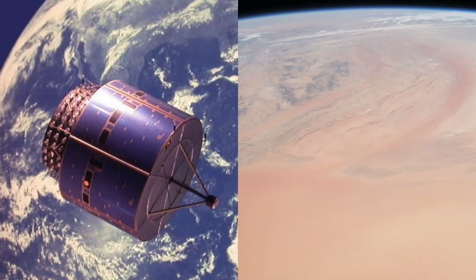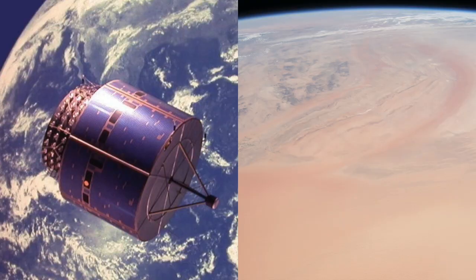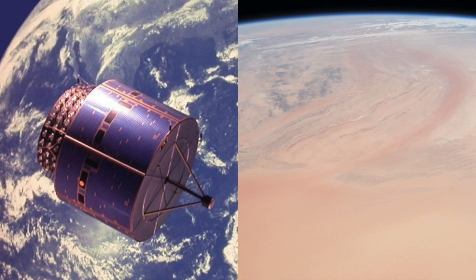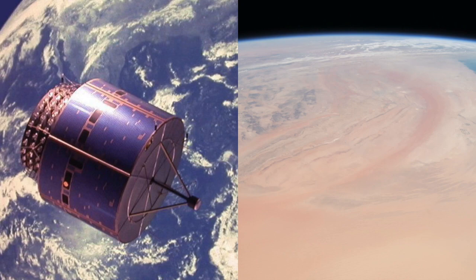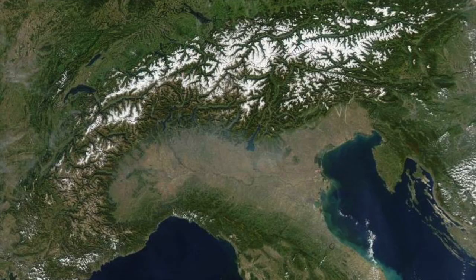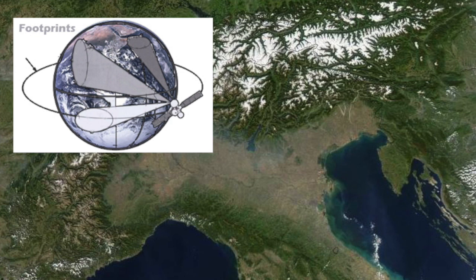Today, another tool at our disposal is satellite imagery. The imagery currently available has much lower resolution than aerial photographs, but it can still be very useful for mapping, identifying certain kinds of sites, and especially for identifying locations where archaeological materials are likely to occur.